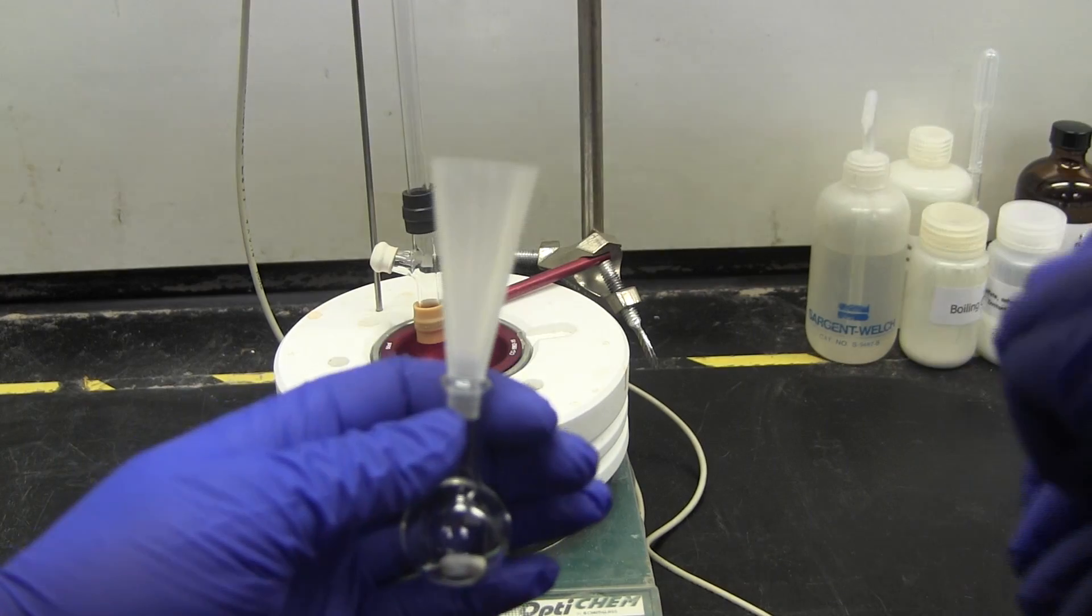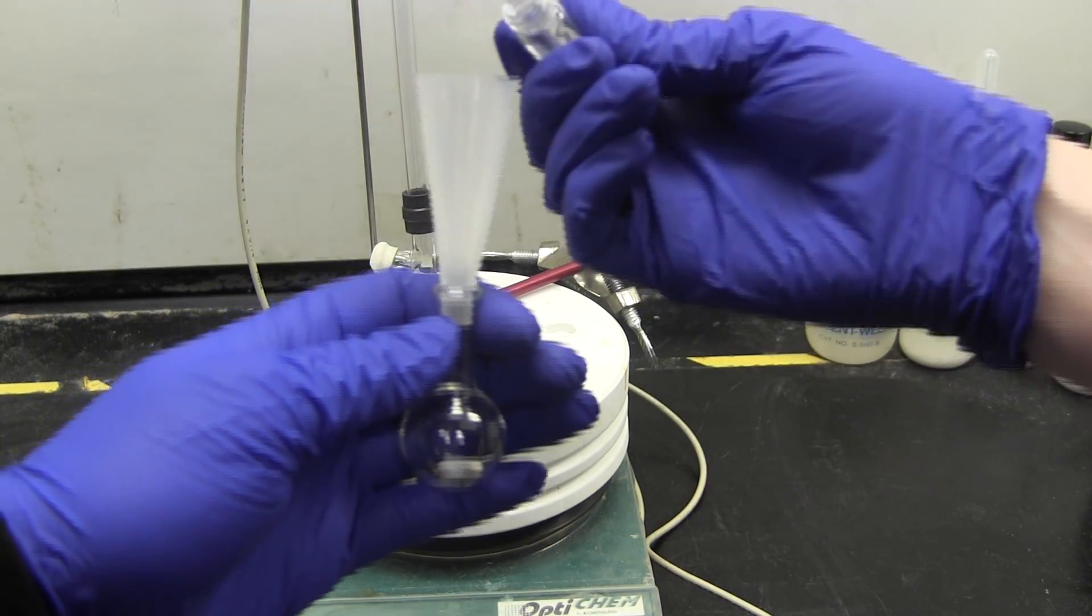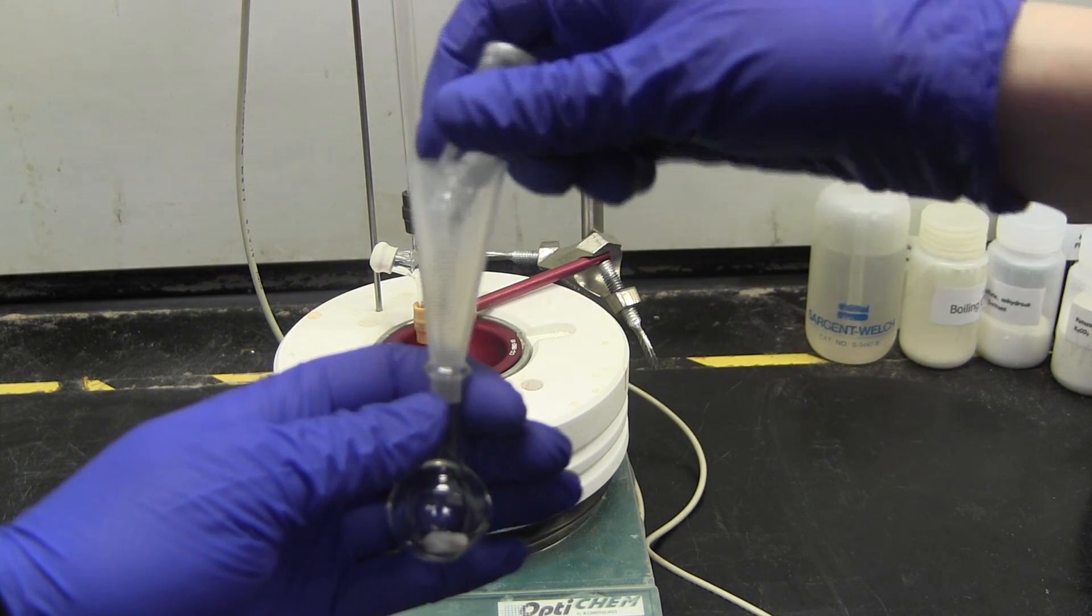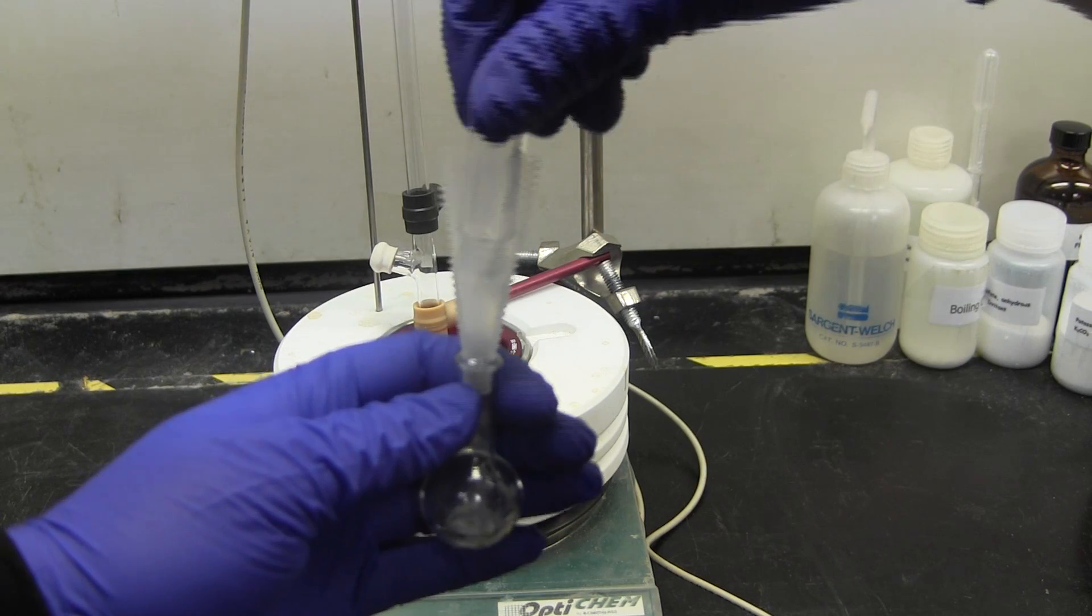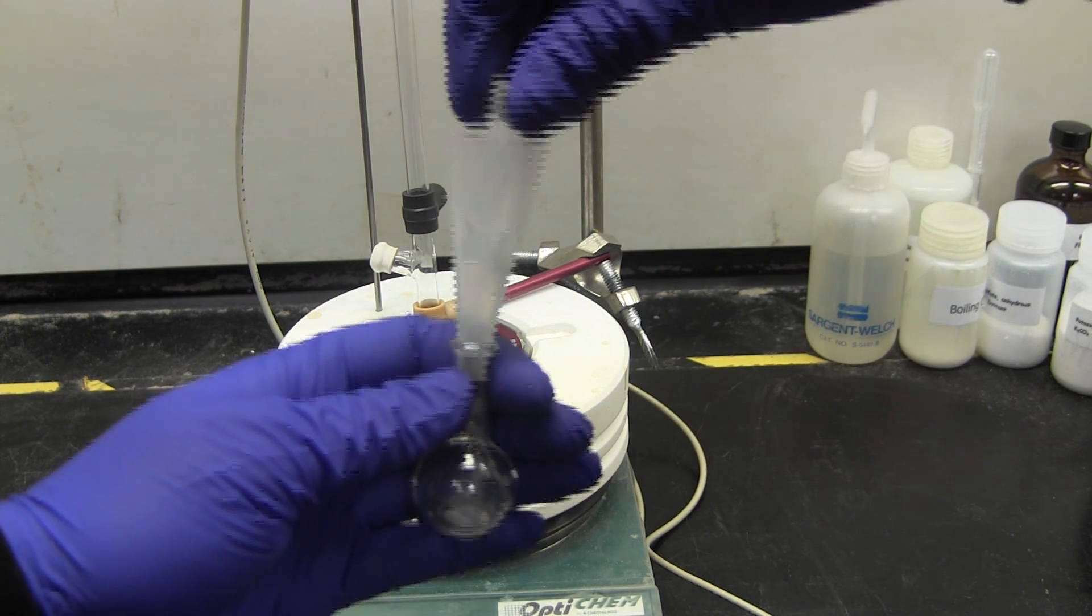The LAH in your vial is pre-weighed, so you do not have to measure it out. Simply add it to your flask through a small chromatography funnel. Weigh the vial before and after addition and record the exact amount of LAH added.